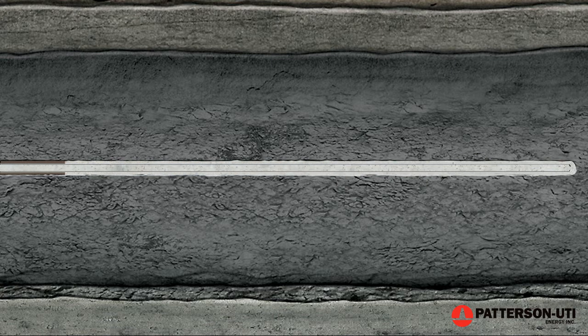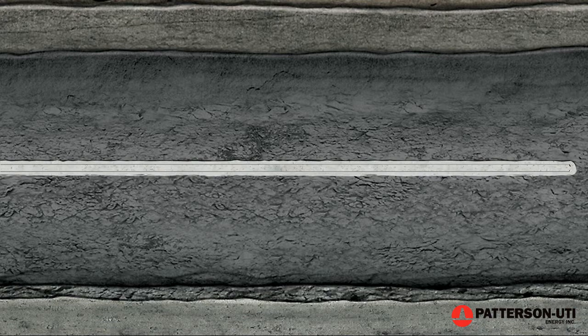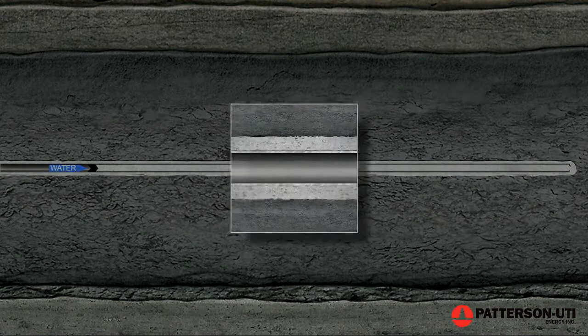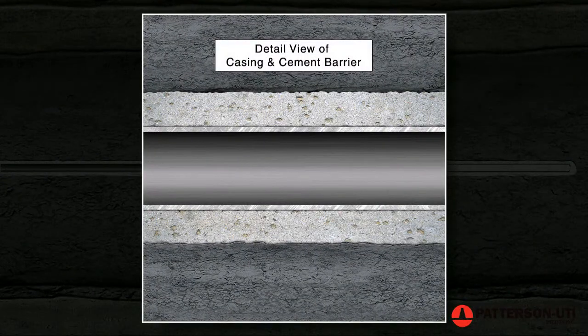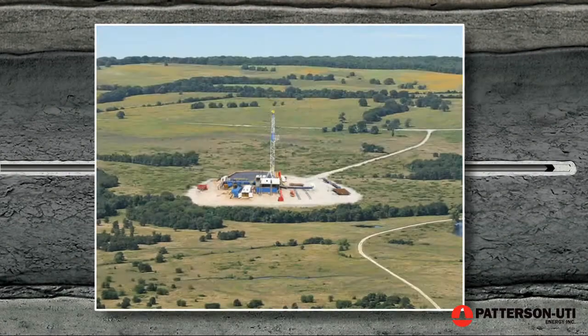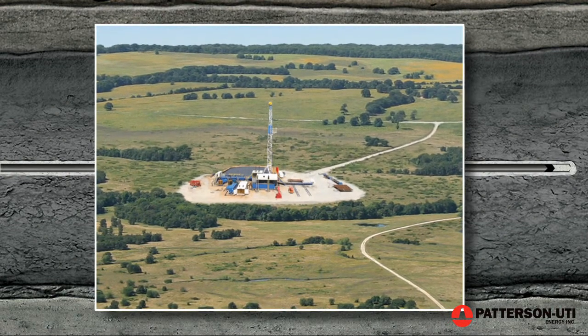Casing the well is a very important process because it permanently secures the wellbore and prevents hydrocarbons and other fluids from seeping out into the formation as they are brought to the surface. At this point, the drilling rig is no longer needed.